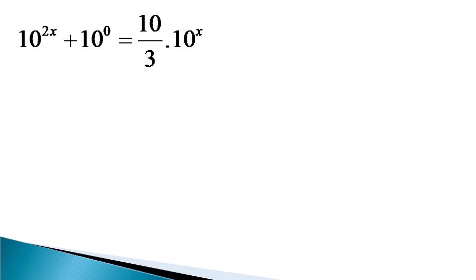Simplifying the indices on the left hand side, the left hand side becomes 10 raised to the power 2x plus 10 raised to the power 0, and the right hand side is equal to 10 by 3 into 10 raised to the power x. The left hand side is 10 raised to the power 2x plus 1, as 10 raised to the power 0 is unity.